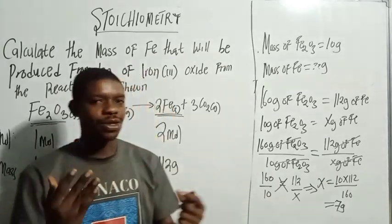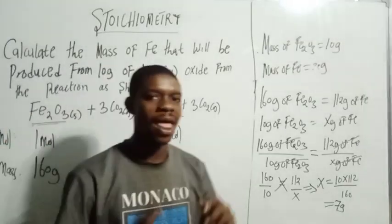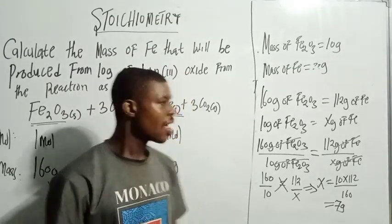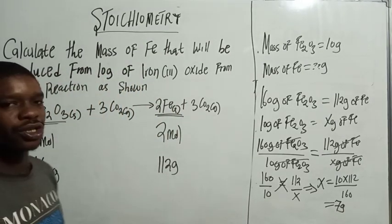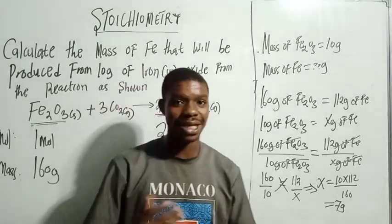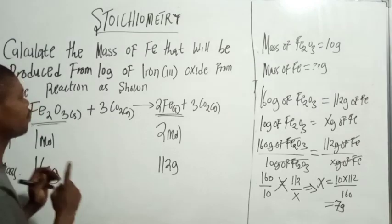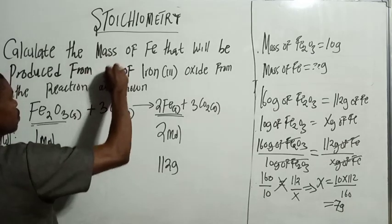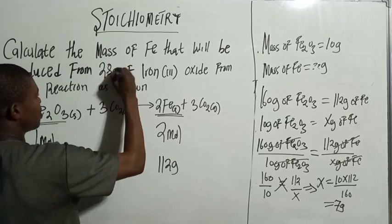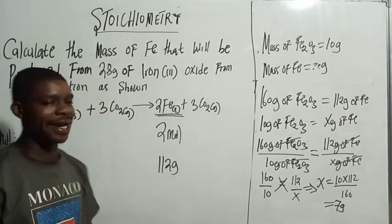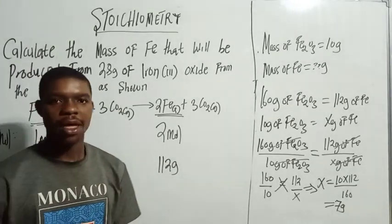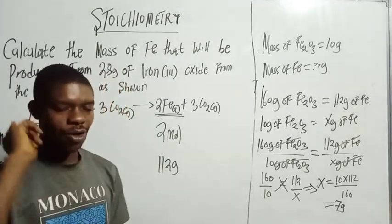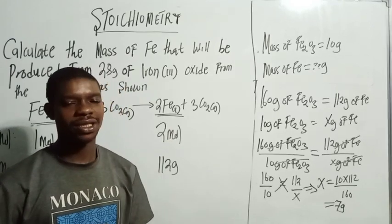I've now taught you two methods: the dimensional analysis method and the direct combination method. Whichever method is easier for you, go through this video again and pick the one that works best. I'd like to hear from you in the comments — which method do you understand faster? As a practice question, I'm going to change the value to 28 grams of Fe₂O₃. Go ahead and solve it and leave your answer in the comment section. Please subscribe, like, and share. Thanks for watching — see you in the next video.